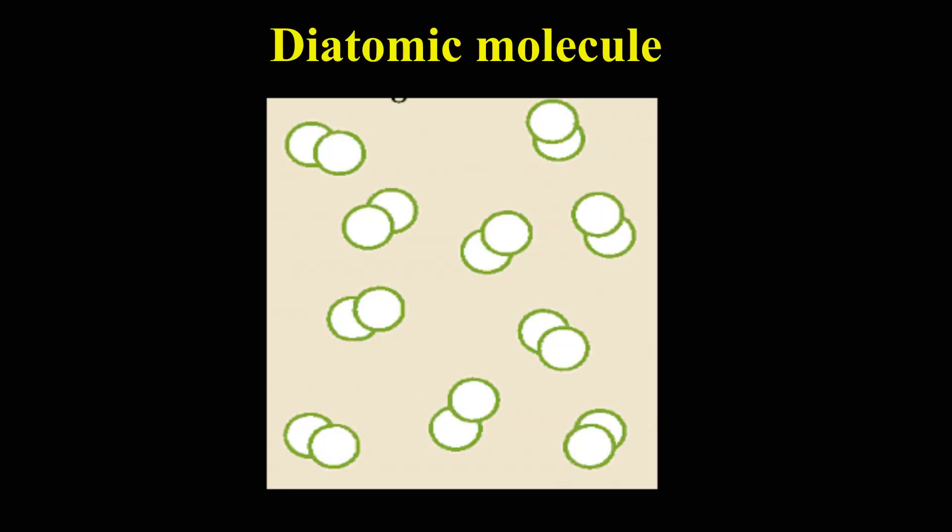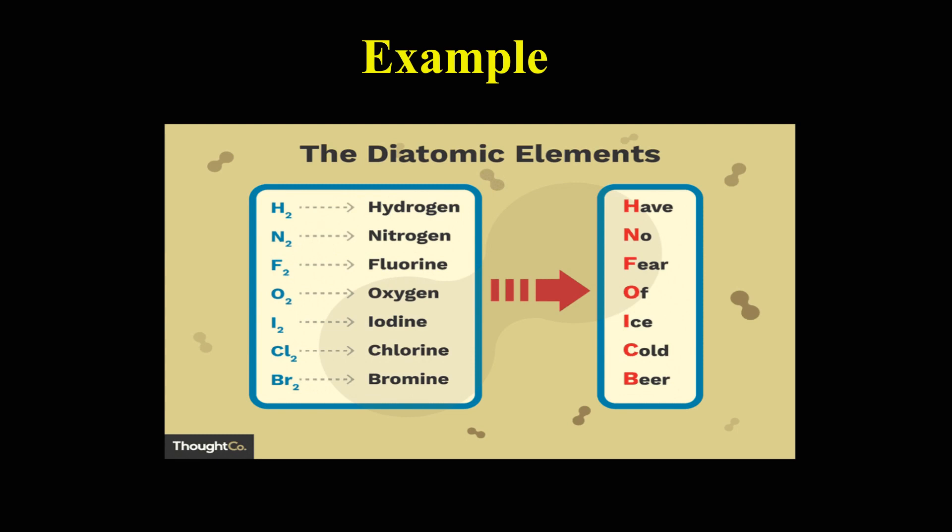There are some molecules which are made from two atoms. These molecules are known as diatomic molecules. Oxygen gas, nitrogen gas, and hydrogen gas are examples of diatomic molecules.